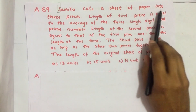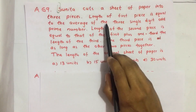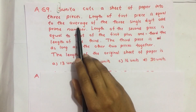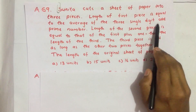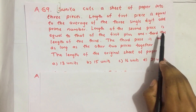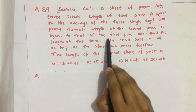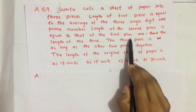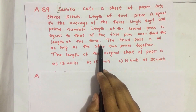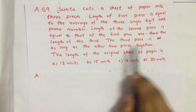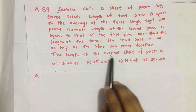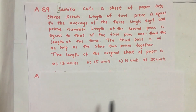Sunita cuts a sheet of paper into three pieces. The length of the first piece is equal to the average of the three single digit odd prime numbers. The length of the second piece is equal to that of the first plus one third of the length of the third. The third piece is as long as the other two pieces together. The length of the original sheet of paper is to be found.